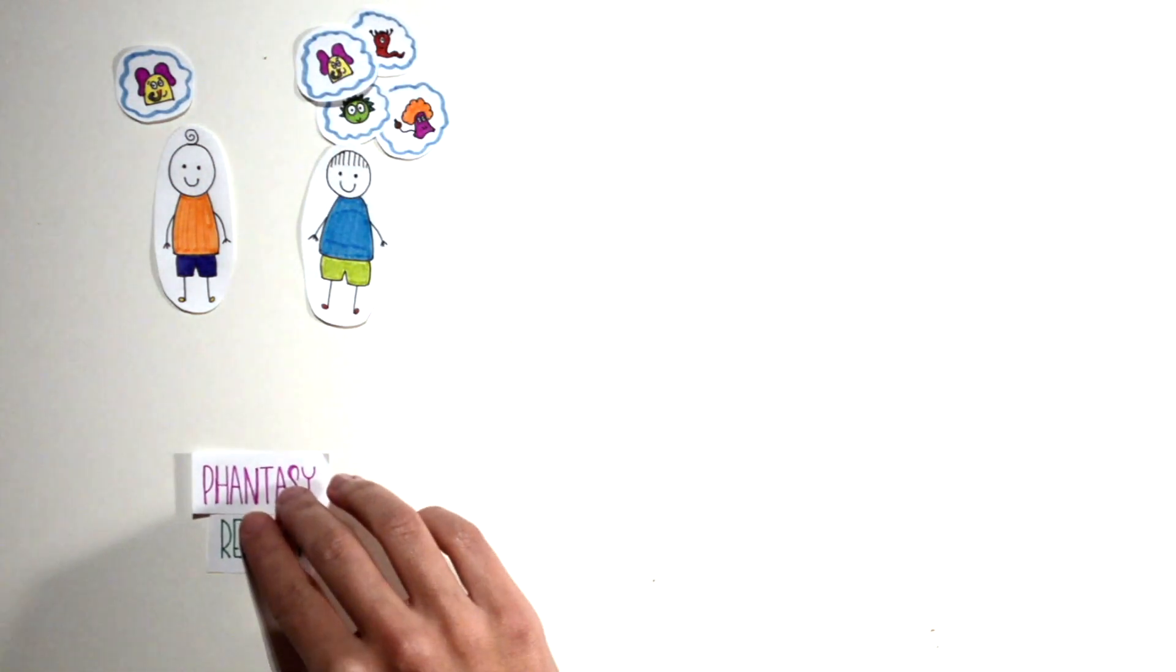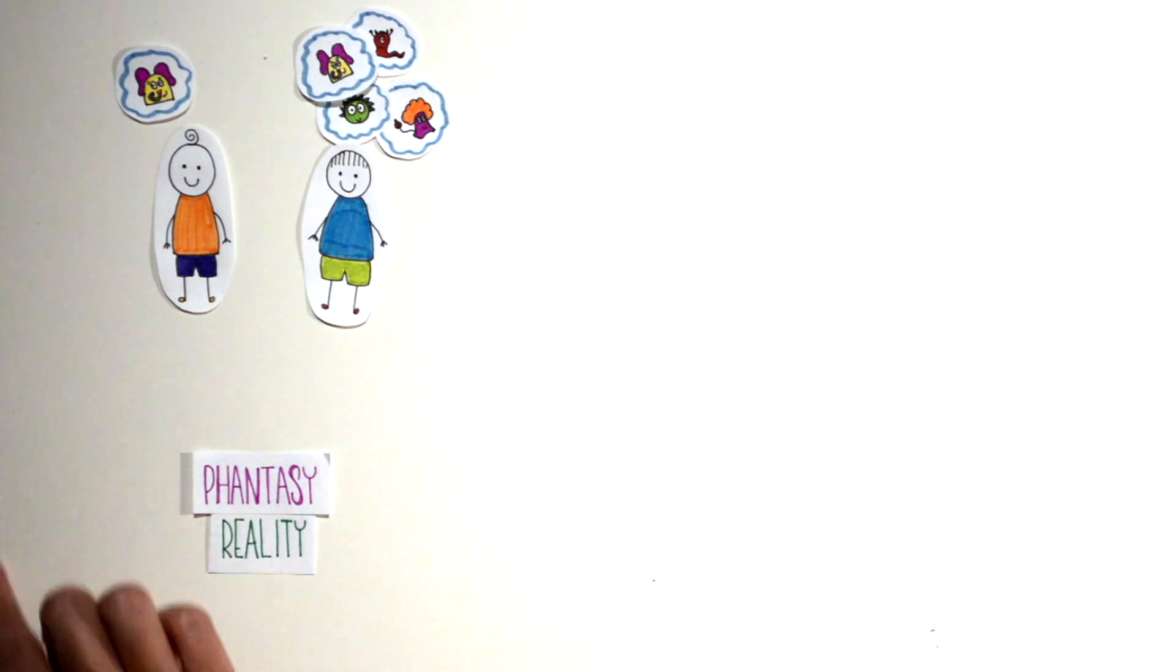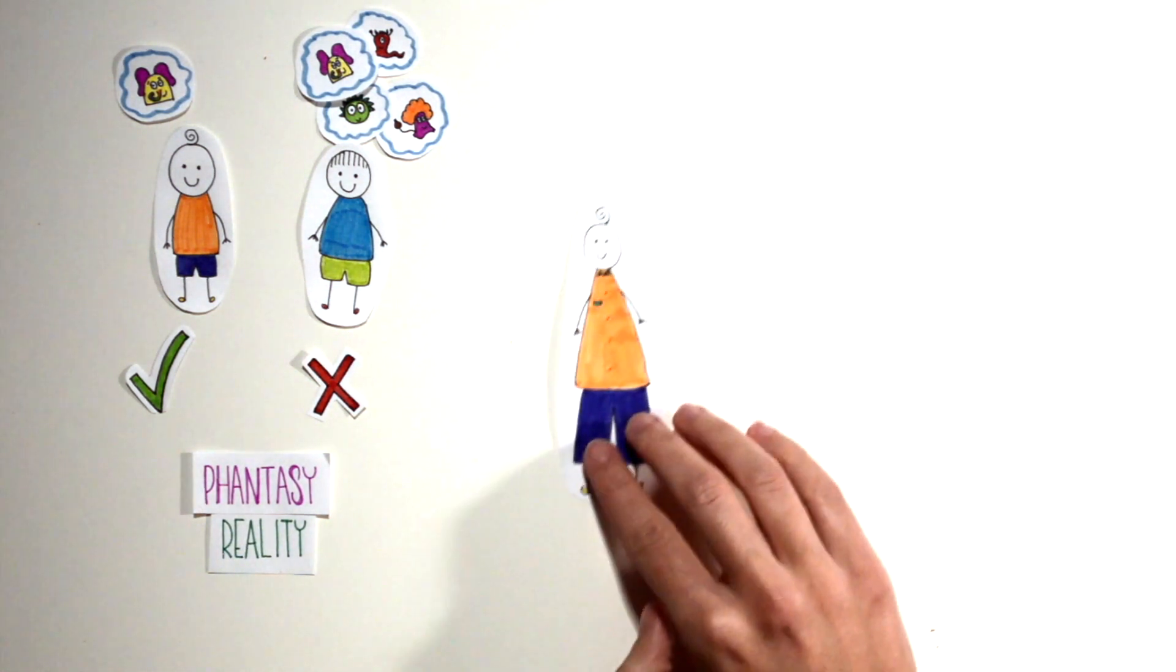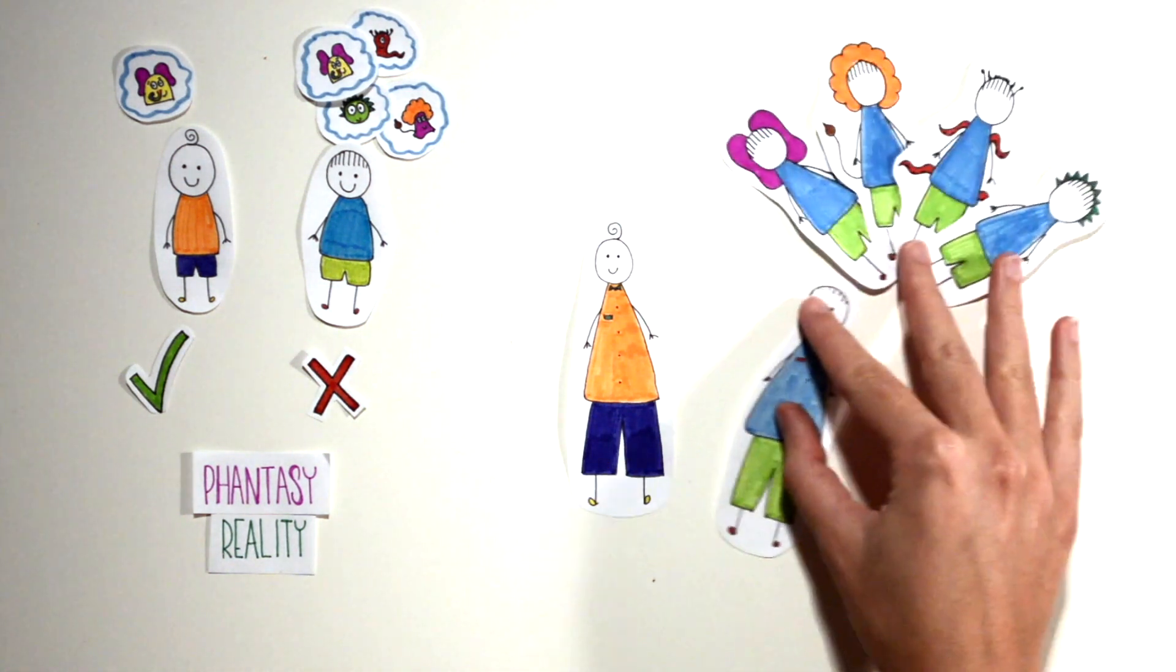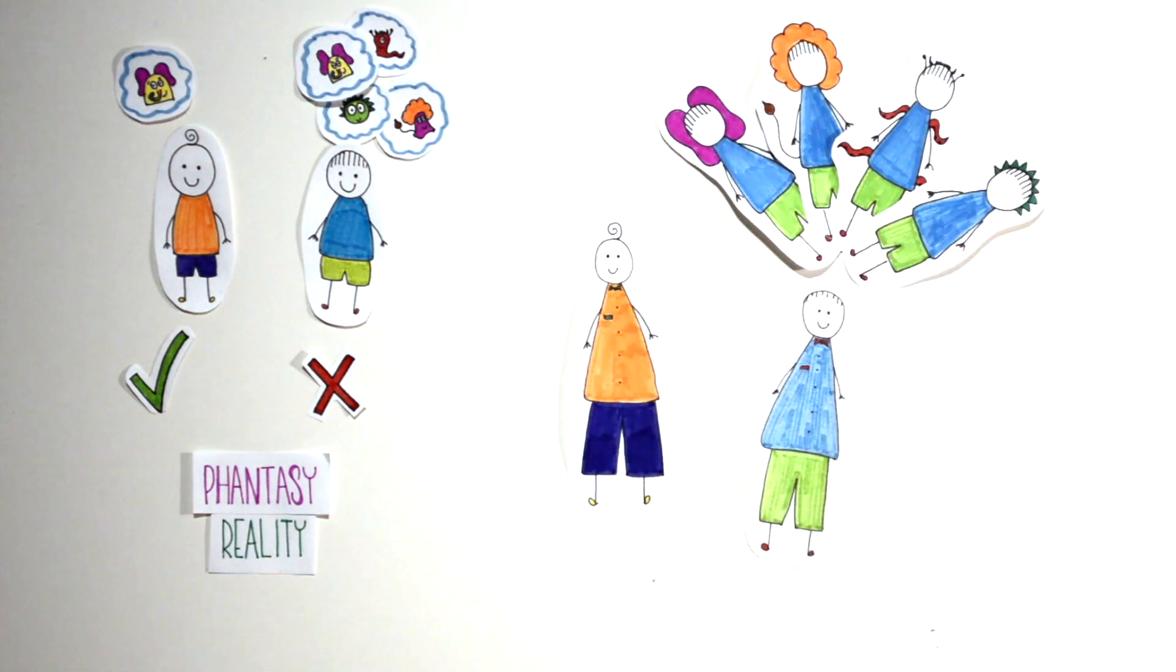The second difference is that Kyle can distinguish between reality and fantasy, while Jacob, already during childhood, sometimes cannot. Finally, Kyle's imaginary companion disappears, while Jacob's imaginary companions remain with him a lifetime in form of other personalities.